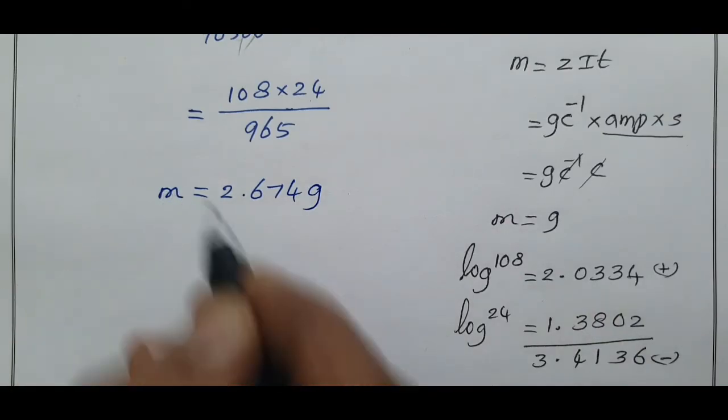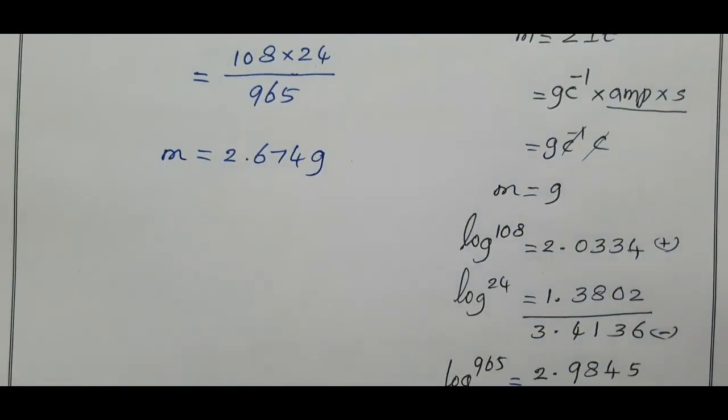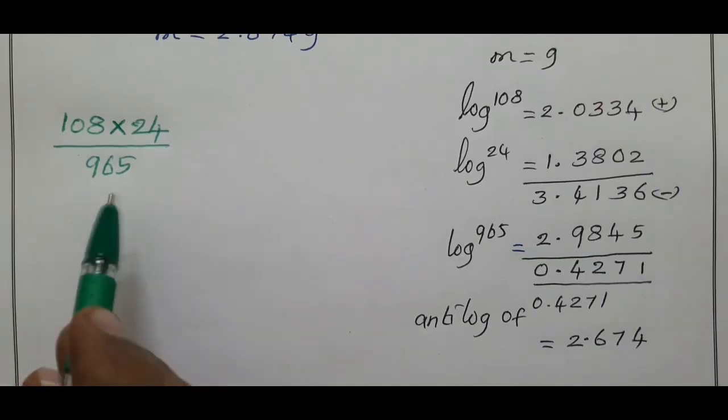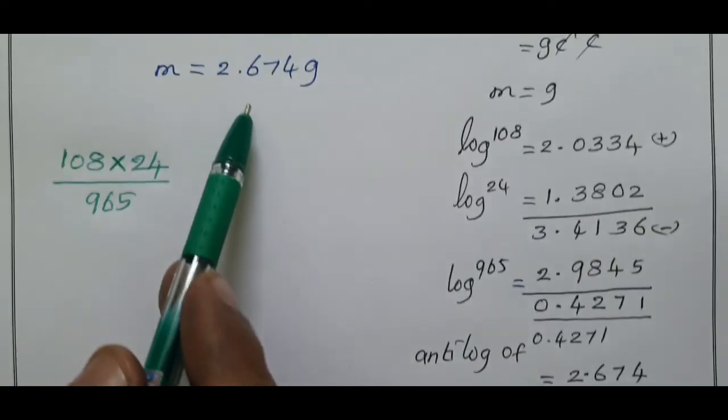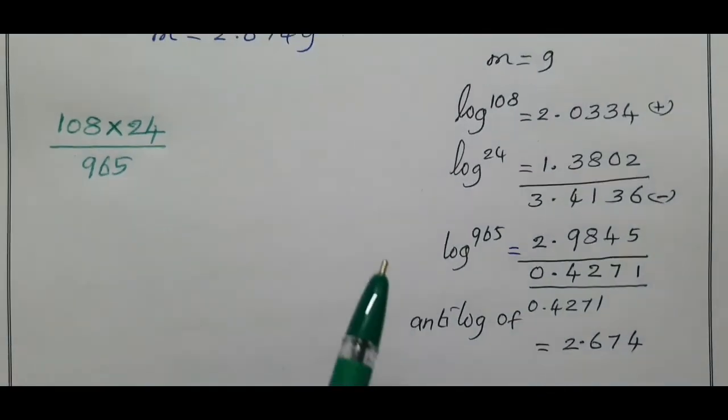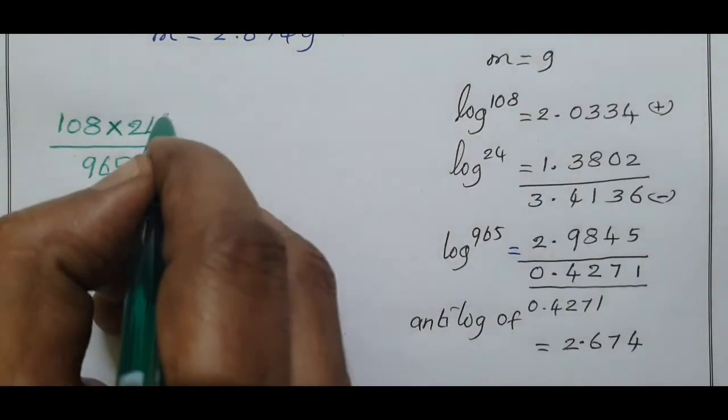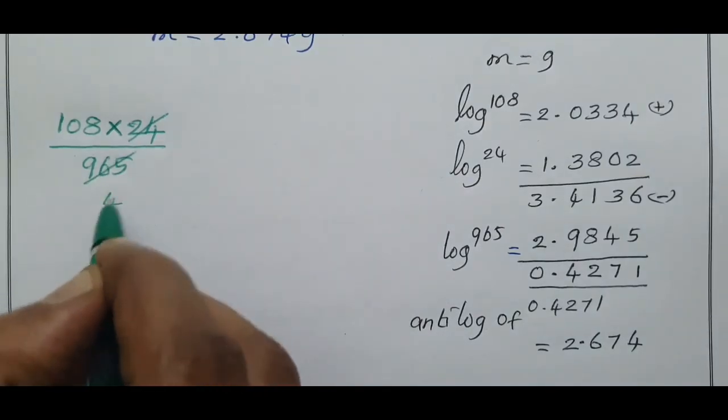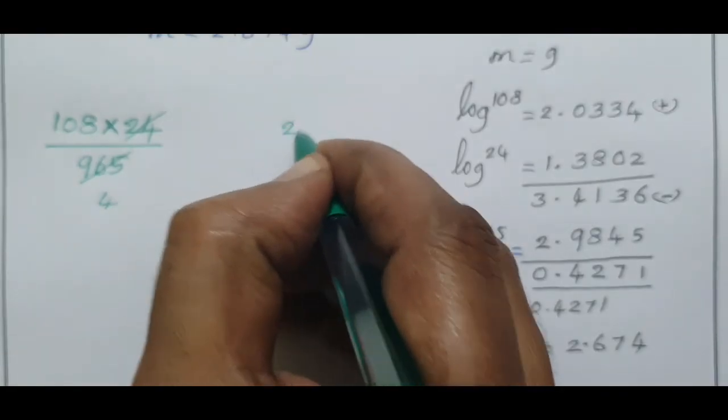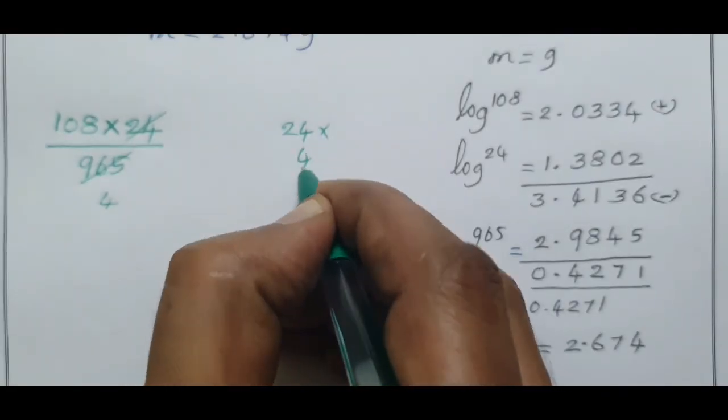One more method, an indirect method. We have here for easy cancellation we can get the approximate value of this answer 2.674. How? 108 divided by 24.